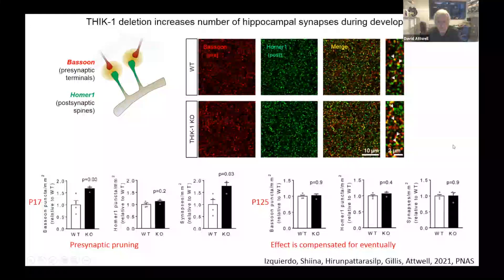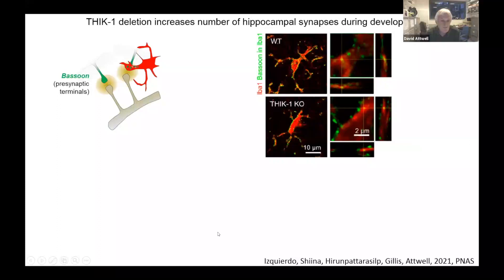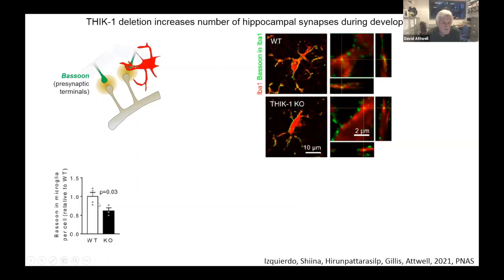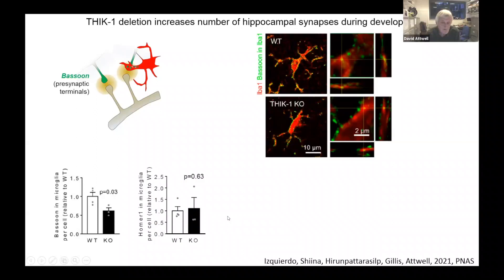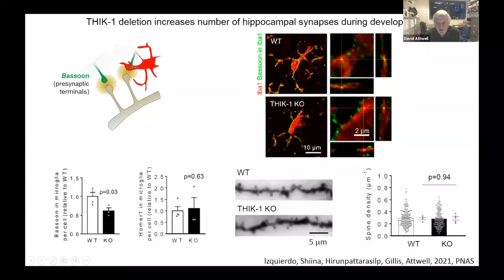We confirmed this by looking at uptake of presynaptic bassoon into microglial cells. Microglia are labeled red, bassoon green — you can see little dots internalized into microglia in wild type, whereas in the knockout most dots are outside the cells. Quantifying: the amount of bassoon inside microglia decreases in the knockout; homer is unchanged; and there's no change in the number of dendritic spines on hippocampal pyramidal cells.